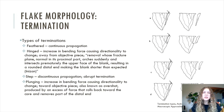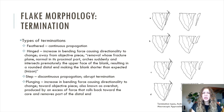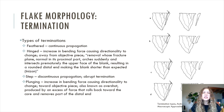There are four main types of flake terminations. The first is the feather termination, or continuous propagation, where the force is distributed so evenly that it feathers out and tapers to a very fine tip where the flake detaches from the objective piece at a very thin, fine point. This is the ultimate goal when flintknapping — you aim to achieve a feathered termination. Another type is the hinged termination, which is an increase in bending force causing directionality to change away from the objective piece. As defined in the textbook Technology and Terminology of Knapped Stone by Inizan, it is the removal whose fracture plane, normal in its proximal part, arches suddenly and intersects prematurely the upper face of the blank, resulting in a rounded distal end making the blank shorter than expected.